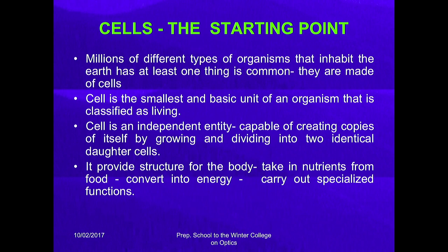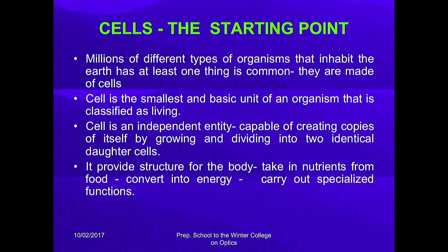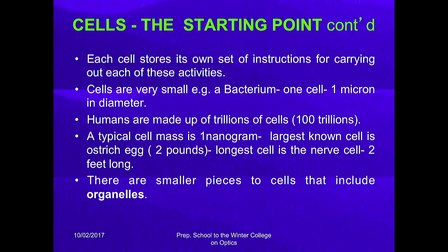Millions of different types of organisms on earth have at least one thing in common — they are made of cells. The cell is the smallest and basic unit of life classified as living. A cell is an independent entity capable of creating copies of itself by growing and dividing into two daughter cells. It provides structure for the body, takes in nutrients from food, converts it into energy, and can perform a specialized function. Each cell stores its own set of instructions for carrying out each of these activities.